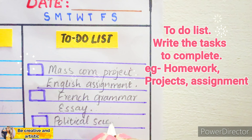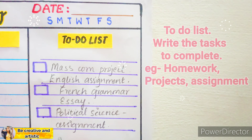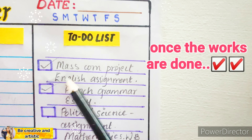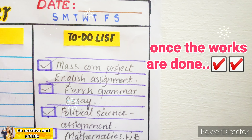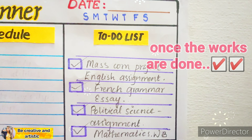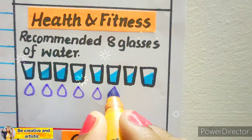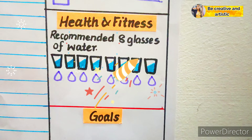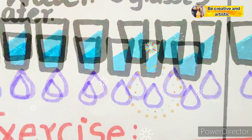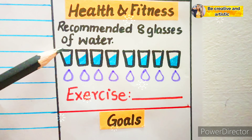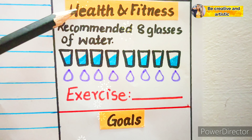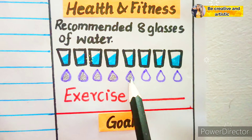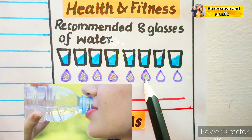The to-do list: list down the tasks you have to complete — for example, assignments, homework, projects, etc. Once the work is done, check or strike it off. The next box is based on health and fitness: the recommended 8 glasses of water — this chart shows how much water you have taken per day and how hydrated you are.